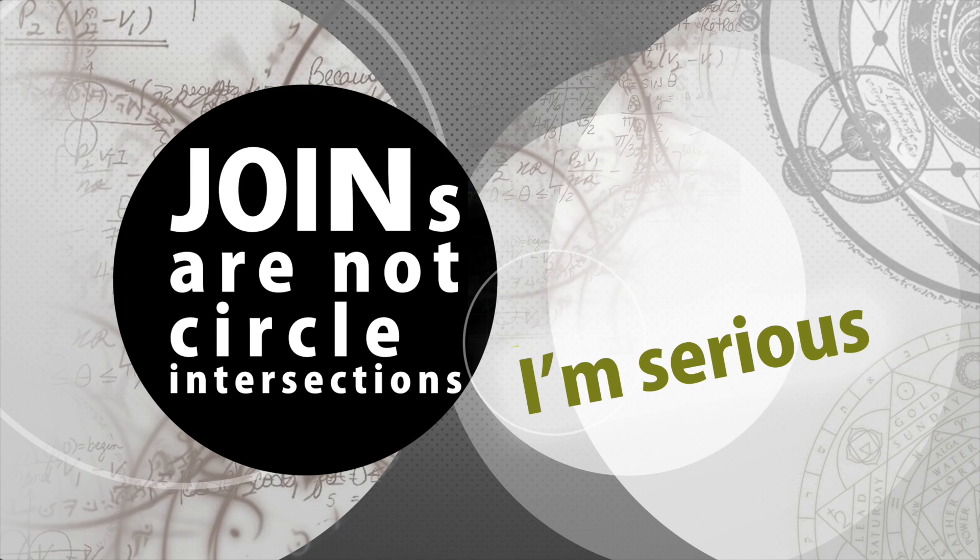Hello. What I want to talk about today is a fact known to many developers, but nevertheless a huge number of articles are still trying to explain the difference between types of joins using the intersection of circles, the so-called Venn diagrams.